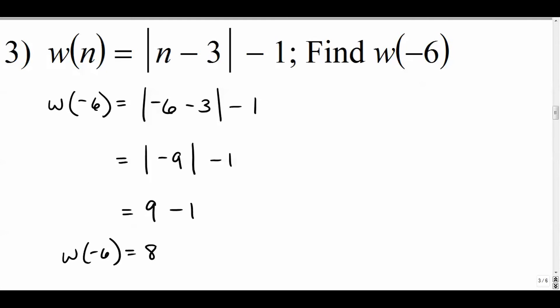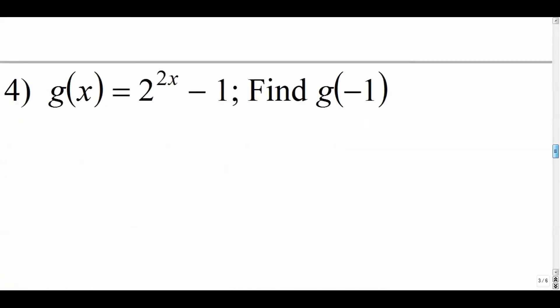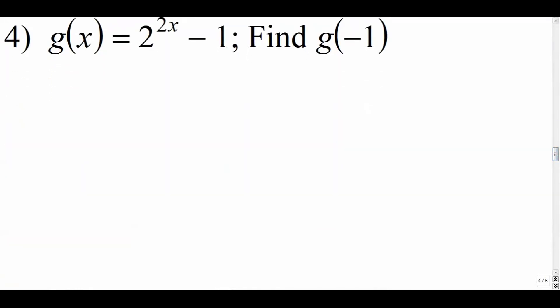Moving on. Number 4 looks like we have some sort of exponential function here and we call the function g of x. We're going to evaluate it for negative 1. So every time that we see an x variable, we plug in negative 1.